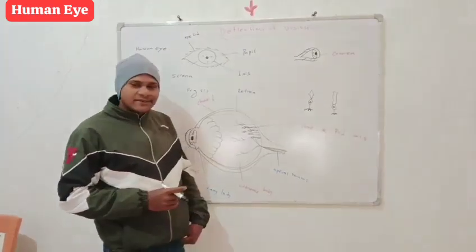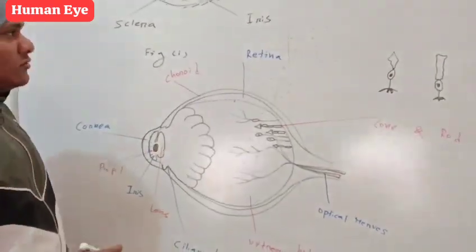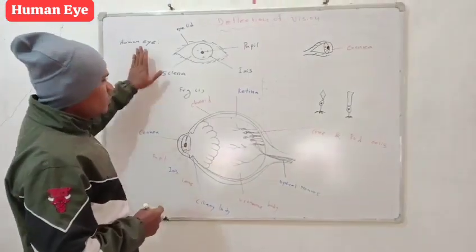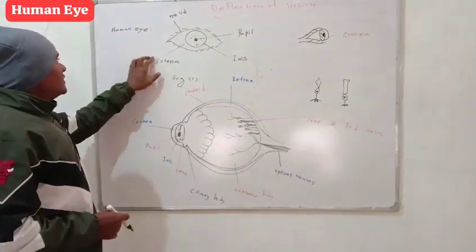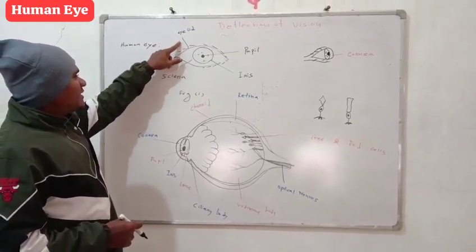You know human eye is a complex lens. So let's look at the board. So this is our human eye.